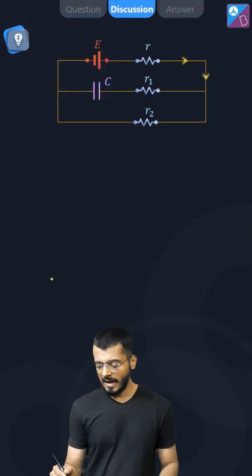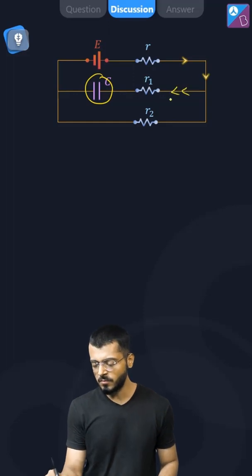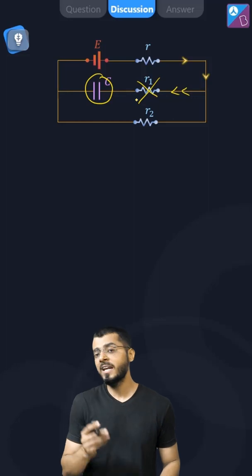So let us see that at the steady state, what will happen is this capacitor will not accept any more charges. So there are no charges flowing through this arm. That is, there is no current through this resistance, so we can remove it.